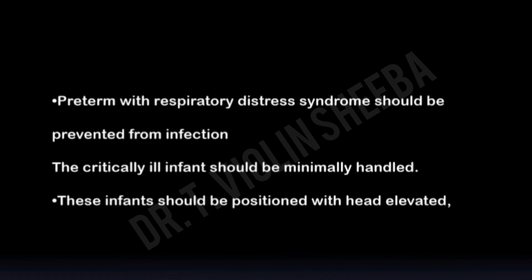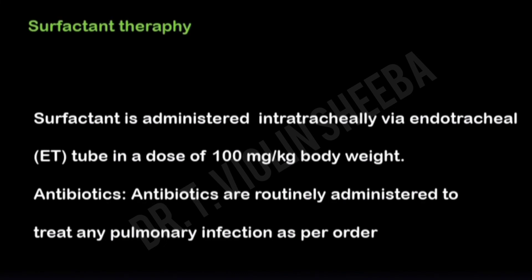Preterm babies with Respiratory Distress Syndrome should be protected from infection by using isolation and aseptic precautions. Critically ill infants should be minimally handled. These infants should be positioned with the head elevated to reduce pressure on the diaphragm. Surfactant therapy helps to improve lung function — it is administered intratracheally via a T-tube at a dose of 100 mg per kg body weight. This therapy leads to improved oxygenation and reduction in the oxygen dose required. Antibiotics are routinely administered to treat any pulmonary infection, as per doctor's order. Endotracheal suctioning should be done as required using strict aseptic technique.